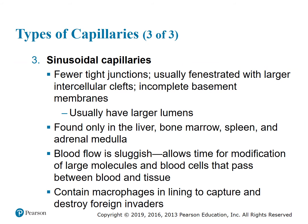The third type is sinusoidal capillaries. They have fewer tight junctions, are usually fenestrated with larger intercellular clefts, and have incomplete basement membranes with larger lumens. They're found only in the liver, bone marrow, spleen, and adrenal medulla — the innermost portion of the adrenal gland. Blood flow here is sluggish, allowing time for modification of large molecules and blood cells. They also contain macrophages in the lining to capture and destroy foreign invaders.